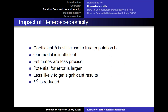Heteroscedasticity is a problem. We don't want it in our regression models. While the estimates of our coefficient b hat should be close to predicting the true coefficient b that exists in the real world between our independent and dependent variables, our model would be inefficient. Our estimates would be less precise, meaning our error would be larger. And if our error would be larger, we would be less likely to get significant results and our R-squared would be reduced.